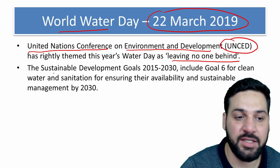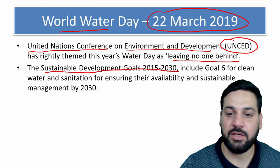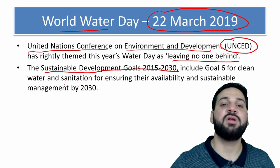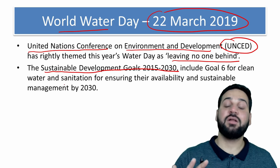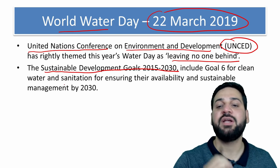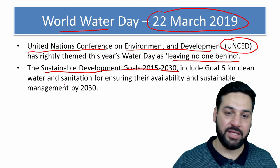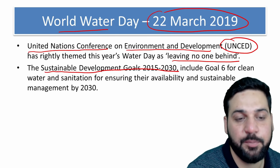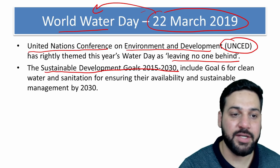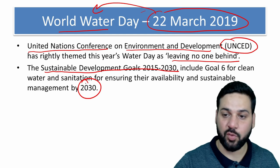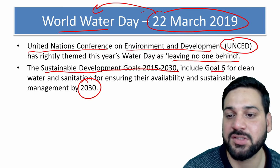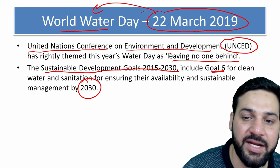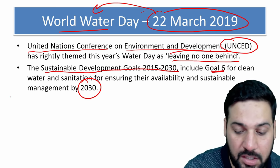The Sustainable Development Goals 2015 to 2030 include Goal 6 for Clean Water and Sanitation, which aims to provide clean drinking water and sanitation by 2030. So from this slide: World Water Day is on 22nd March, the theme is 'Leaving No One Behind,' and SDG Goal 6 targets clean water and sanitation by 2030.